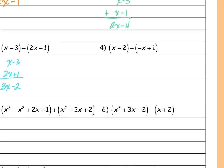Number four is an addition problem. I've got x minus x — those are my like terms — and then 2 and 1 are like terms. So x plus negative x is zero, and 2 plus 1 is 3. My whole answer for this one is just 3.